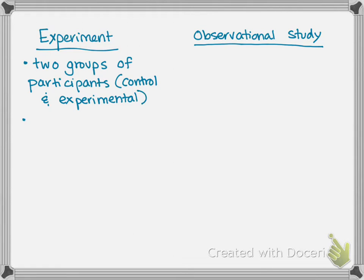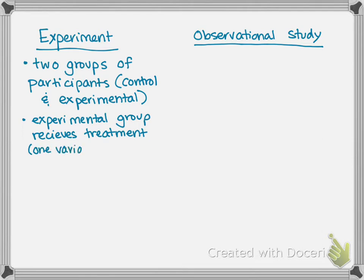The two groups of participants are split up — who we're researching. This could be people, places, things. The experimental group receives treatment — one variable is altered. We try desperately in an experiment to keep every other variable the same and change only one variable among the experimental group. That way, we can compare at the end: did the changing of that one variable impact the experimental group? And we can directly compare them to the control group, which has no treatment applied.